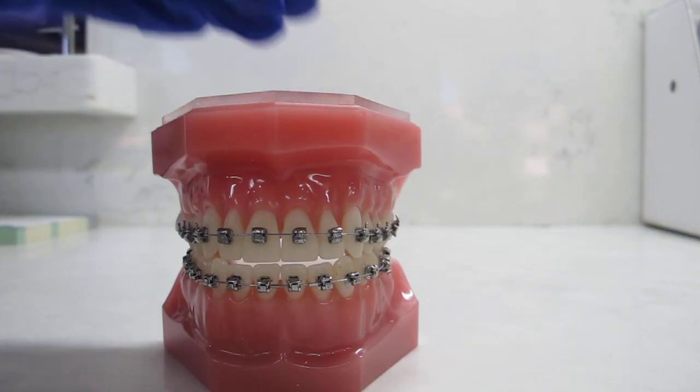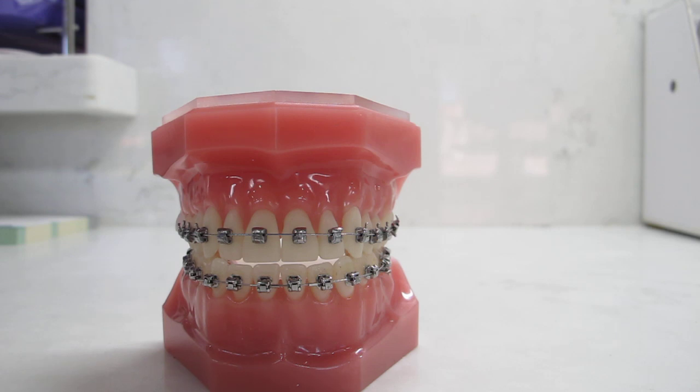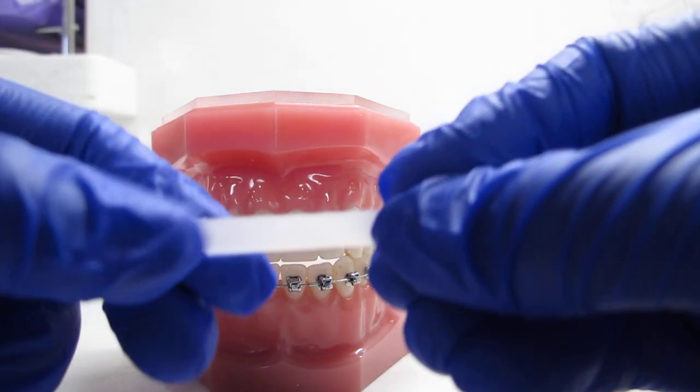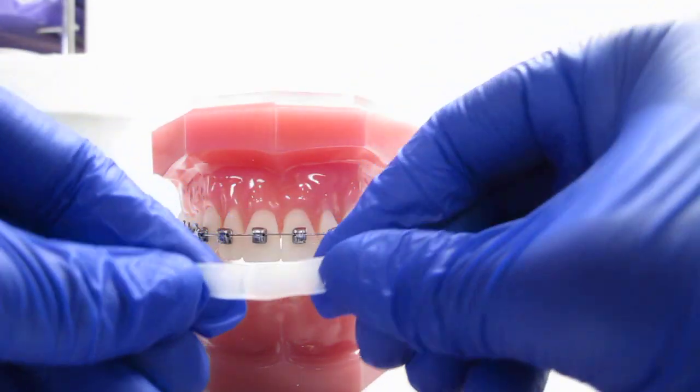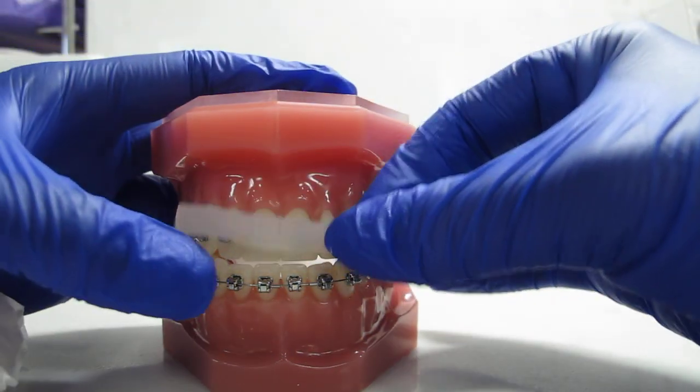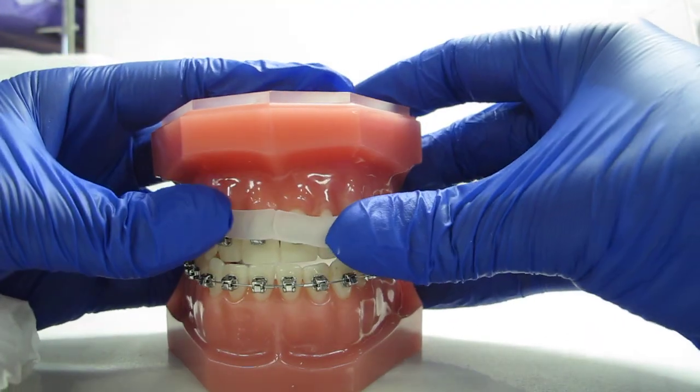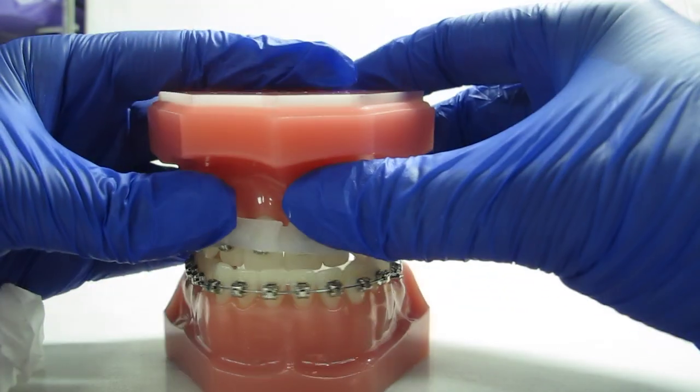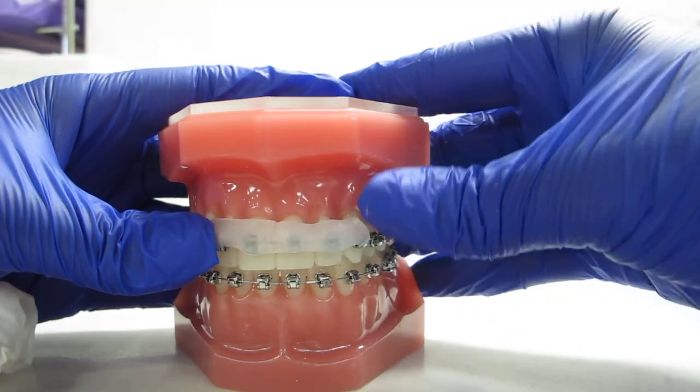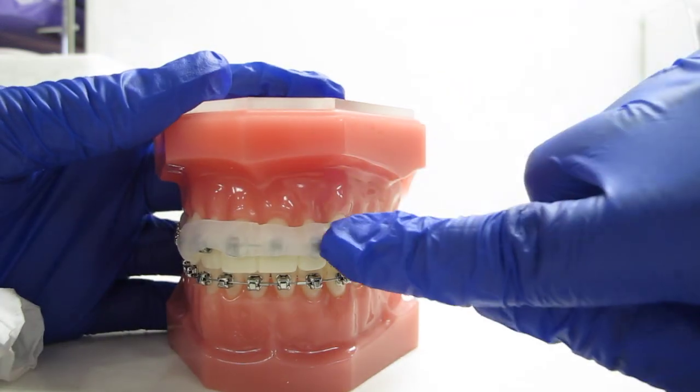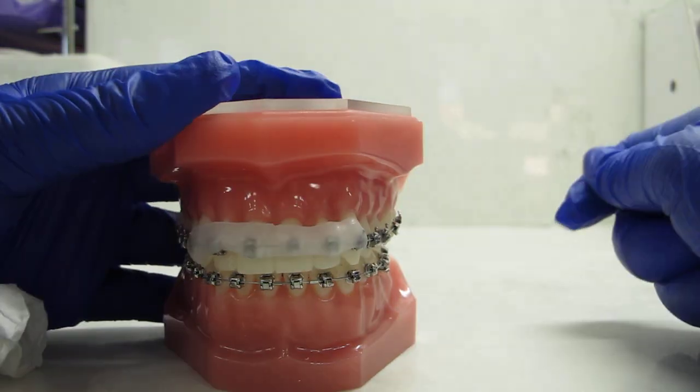You can also take an entire stick of wax for bedtime your first couple of nights to get used to the brackets if needed. Warm it between your fingers, place it on whatever is bothering you, so it's now a cushion while you sleep.